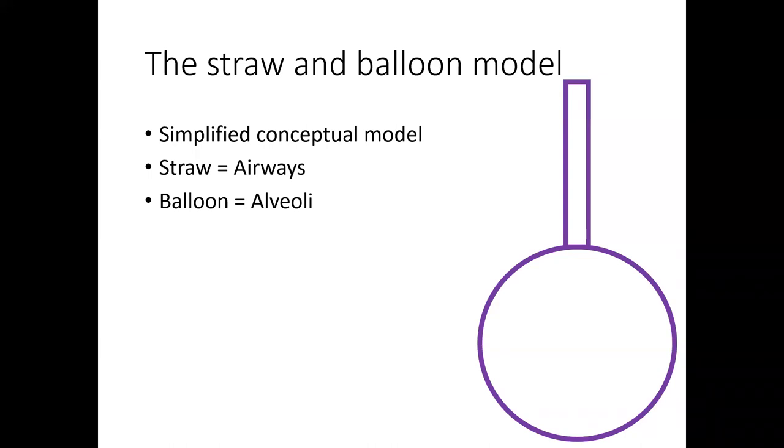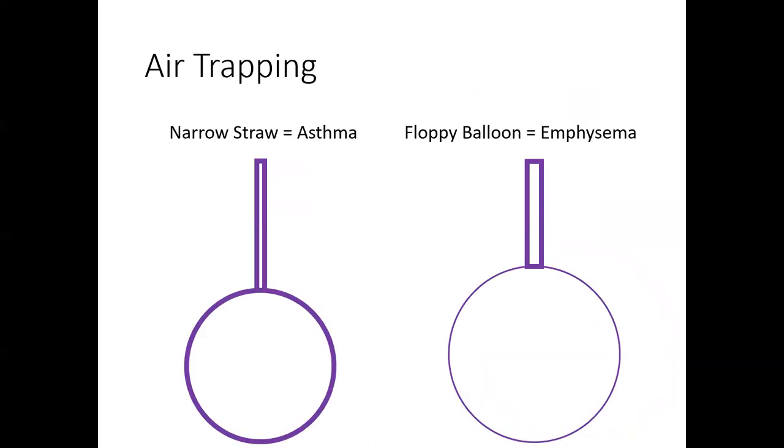The straw is going to represent the airways, and the balloon is going to represent the alveoli. Air trapping is a phenomenon where the patient is not able to breathe out all of the air that was delivered during inspiration. This process is called dynamic air trapping, and sometimes called auto PEEP. This is seen in patients with asthma or COPD.